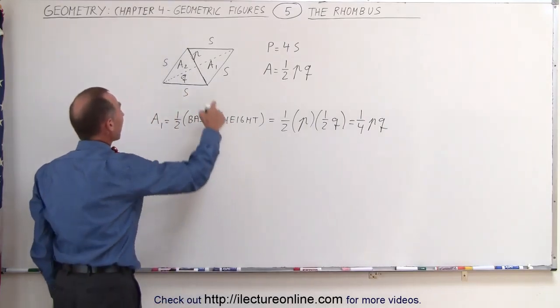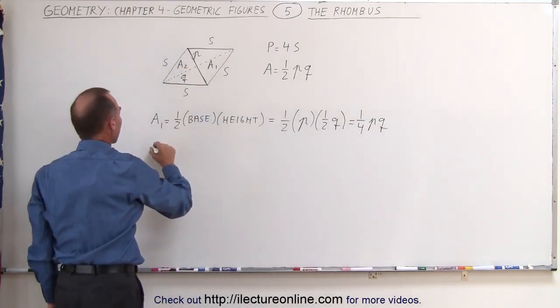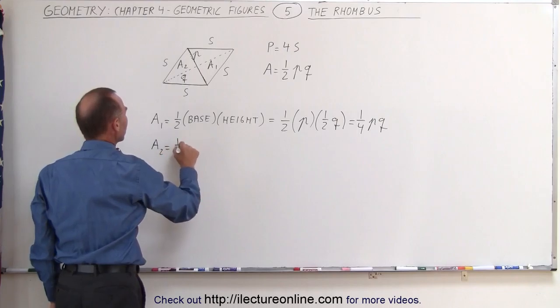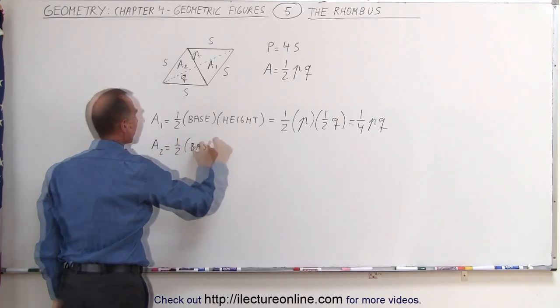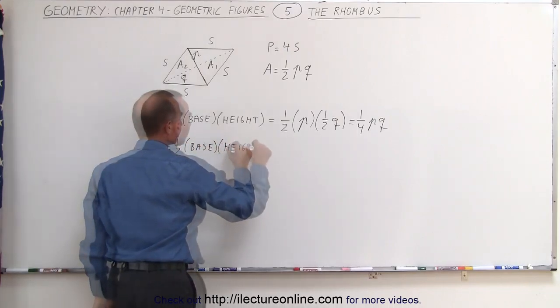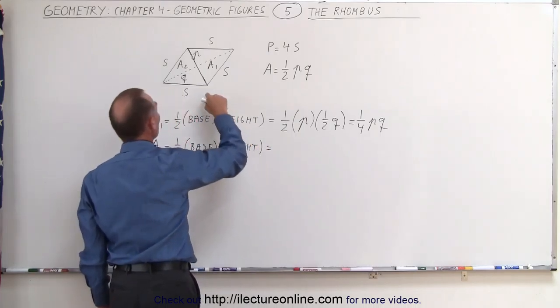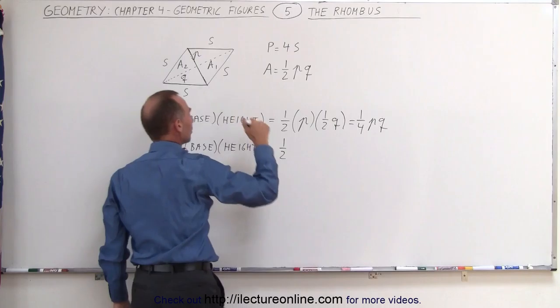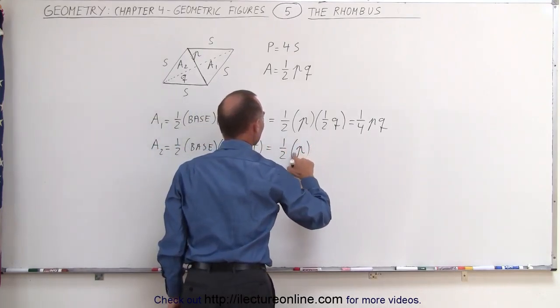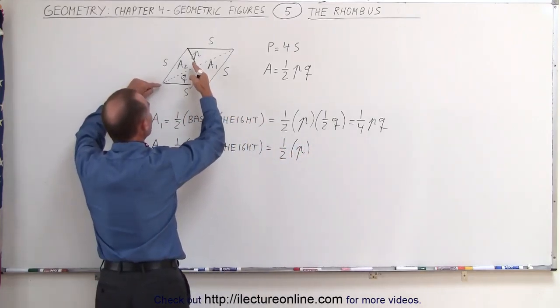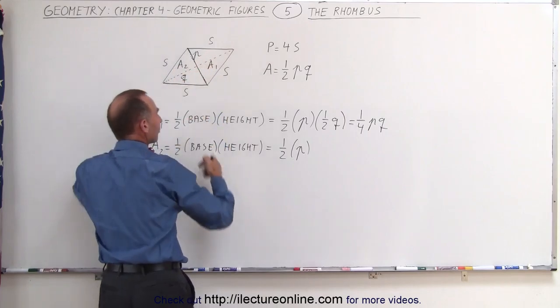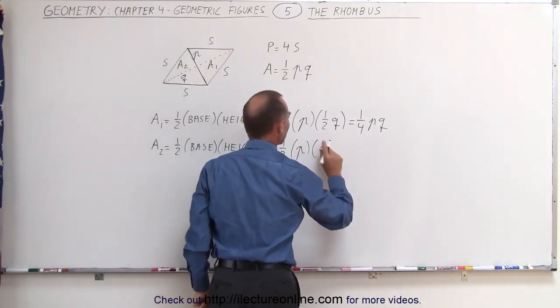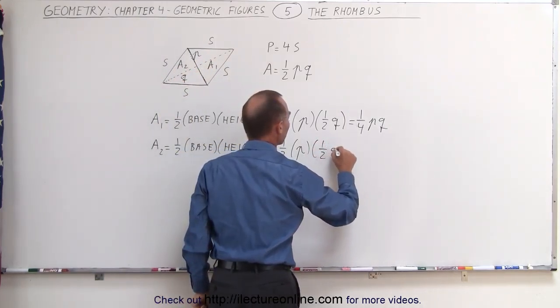Now when we do the same for the other triangle, we find the area A2, that's also going to be equal to half the base times the height. And here again that would be one half. The base would be the length of the shorter diagonal P and the height of that triangle will also be half Q - it would be the other half of the diagonal Q, so that would be one half Q.